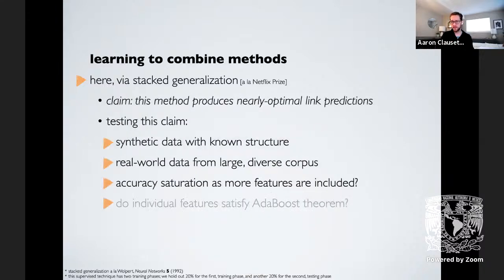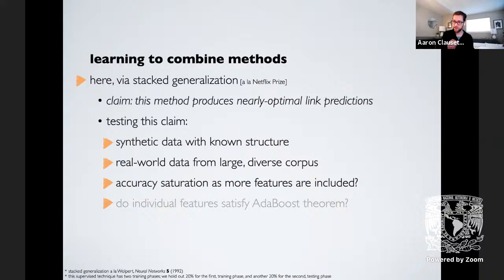The basic claim is that this meta-learning approach produces nearly optimal link predictions. We test this three ways: on synthetic data with known structure (where we can mathematically calculate the optimal accuracy), on real-world data from our 550-network corpus, and by asking how many features are actually necessary. For the synthetic data, we use a stochastic block model and vary the number of communities (1, 2, 4, 8, 16). With one community (Erdős-Rényi), it's not possible to do better than chance since all edges occur with equal probability.